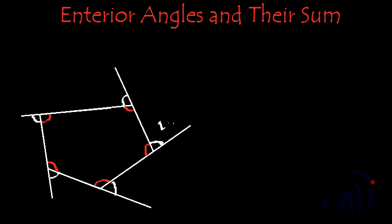Since I called this angle number one, I will call this one two, this one three, this one four, and this one five. So if we have a pentagon, we are going to have five interior angles and at the same time we will also have five exterior angles.